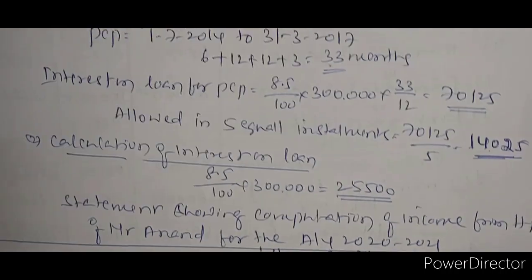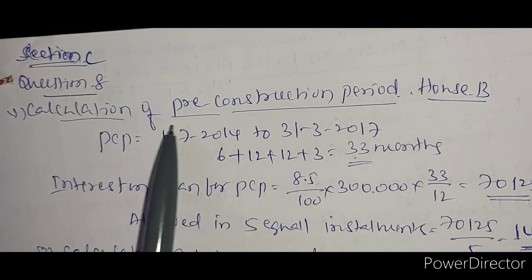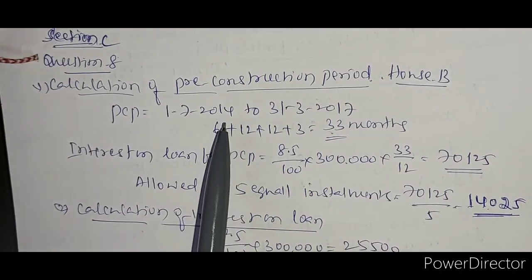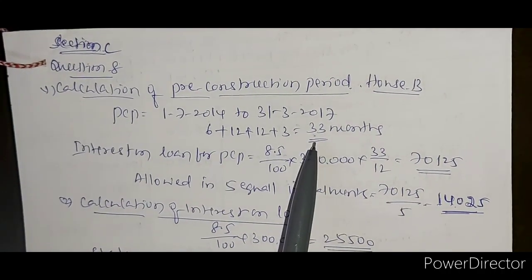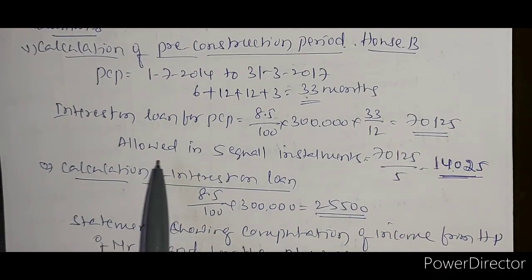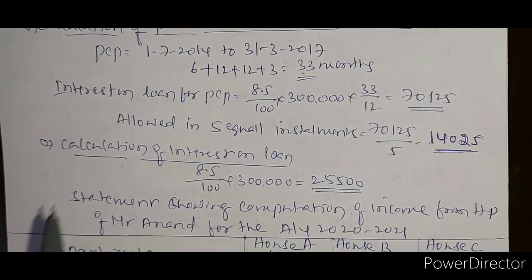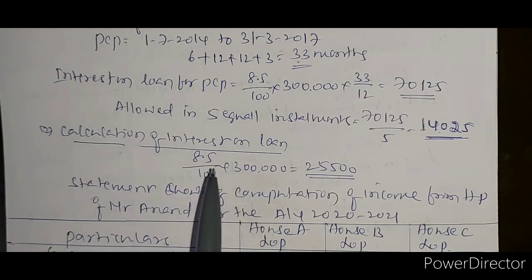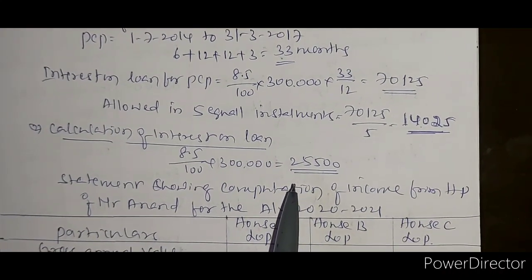Next in the 2017 paper: pre-construction period calculation. Loan taken 1st July 2014, construction completed 31st March 2017, giving 33 months as the pre-construction period. Interest on loan for PCP is seventy thousand one hundred twenty five rupees, allowed in 5 equal installments: fourteen thousand twenty five rupees. Interest on loan for the current year is 8.5% of three lakhs, giving twenty five thousand five hundred rupees.